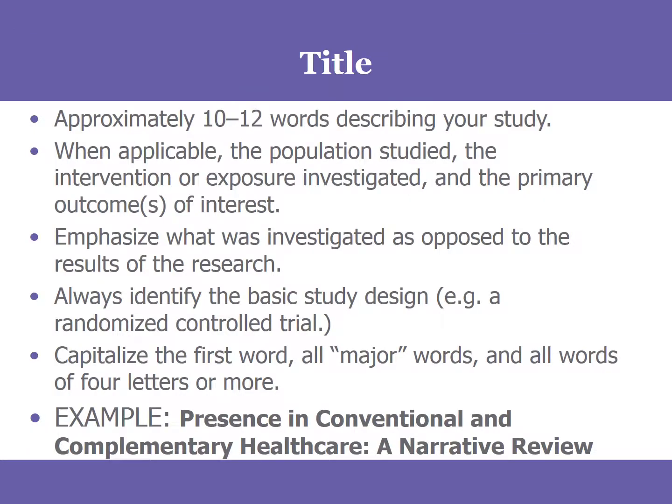Starting out, you're going to have your title, and that should be about 10 to 12 words. When it makes sense, you're going to include whatever the population, intervention, exposure, or outcomes are that you're investigating with your review. So if you're looking at a particular intervention in a specific population and all of the research related to that, you want to make sure that's in your title. In some cases, it's a more general area that you're investigating, and that information would be provided. You're not going to include any findings or results of your literature review in your title — it's going to be more about the question.